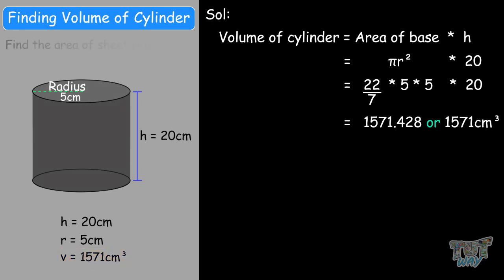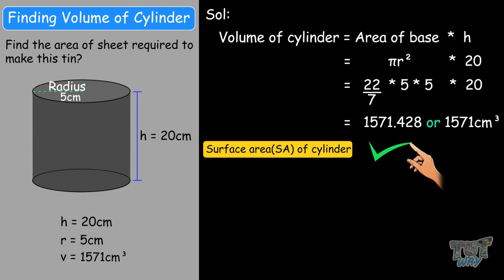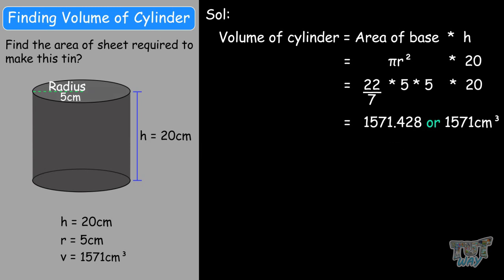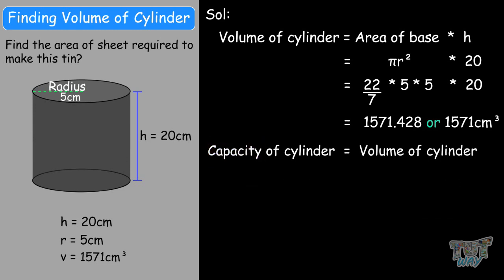Now let's find the area required to make this cylindrical tin of 20 centimeters by 5 centimeters. Will you need to find the volume? No — you need to find the surface area, because we need to find the amount of sheet required to make this tin. But if the question says find the capacity of this tin, we will find the volume, because capacity is the amount of something that a 3D object can hold. So volume is related to capacity — capacity is 1,571 centimeters cubed.